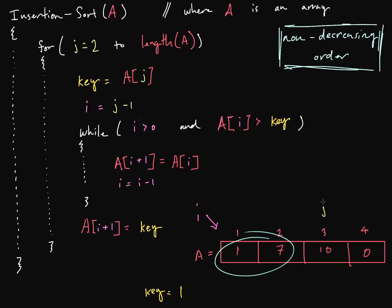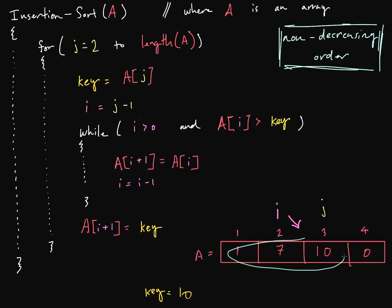We're going to increment our j value and change our key value to 10. Now our i index is at the end of the sorted sub-list. While there are still elements left — there are two — we do a comparison: is 7 greater than our key value, 10? It is not. So we don't need to do any shifting. All we have to do is insert our key value into the already sorted sub-list at i plus 1. It's already there, but our algorithm inserts it anyway. Now we're done with that iteration and we have a new sorted sub-list.